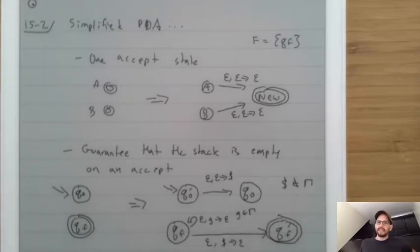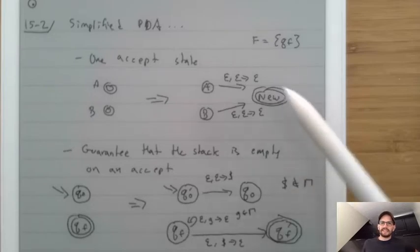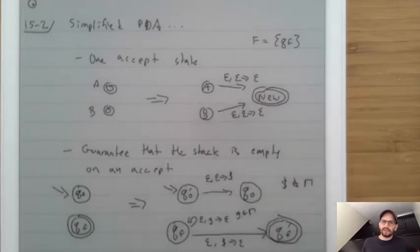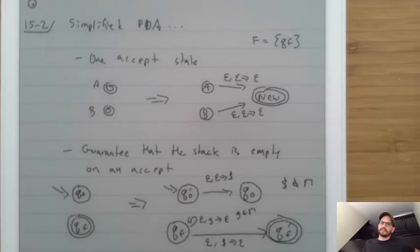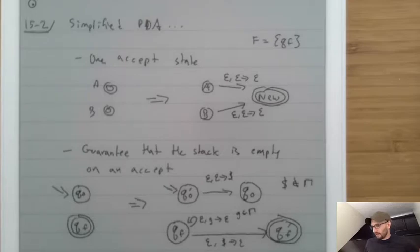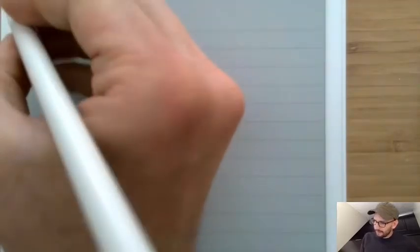Notice that these assumptions were already true for our zero-to-n, one-to-n machine — it already did this. But there's another assumption that we're going to make.